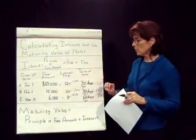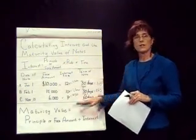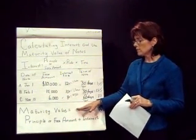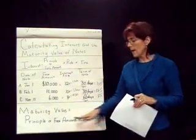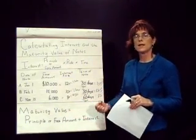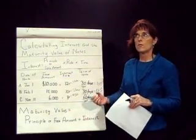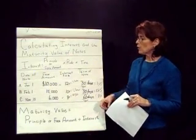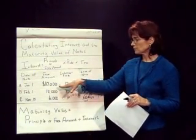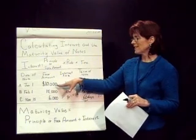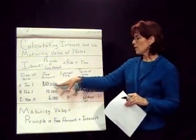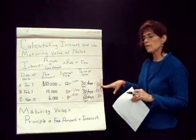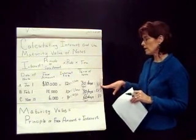Another thing when we're looking at notes is the term maturity value. Maturity value simply means the principal amount plus the interest — what is due on the due date when the note matures. So going back to the first note, it was a $10,000 note with $100 interest, so the maturity value in 30 days would be $10,100.